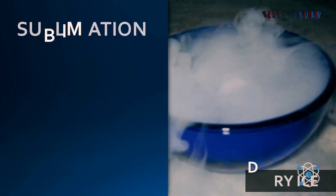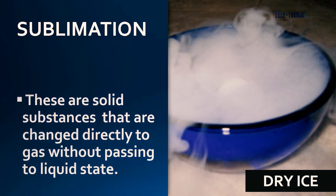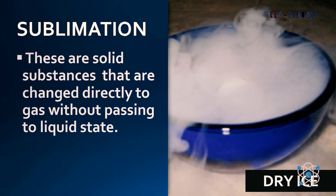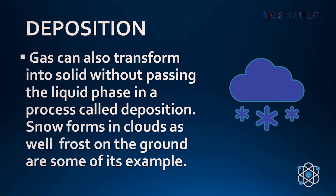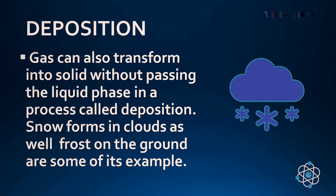Next, we have sublimation. Sublimation involves solid substances that change directly to gas without passing through a liquid state. An example is dry ice. Likewise, a gas can also transform into solid without passing through a liquid phase in a process called deposition. Examples of deposition include snow forming in clouds as well as frost on the ground.